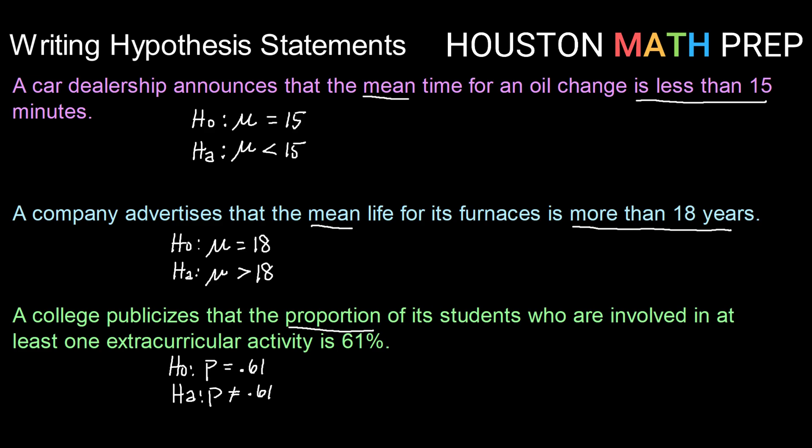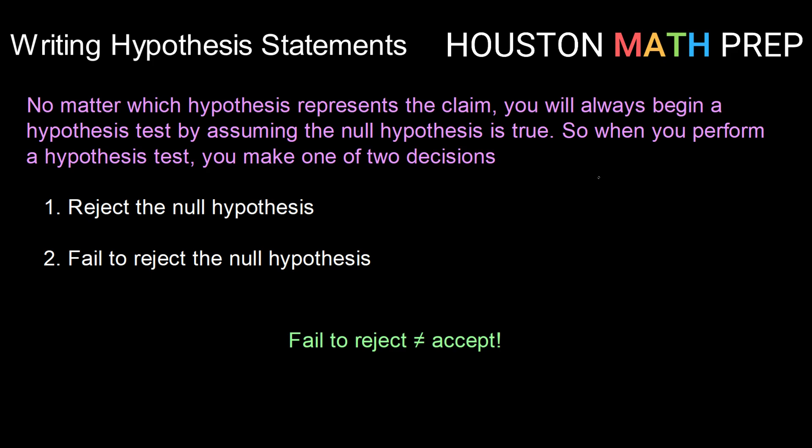Now, what do we do with those hypothesis statements? Well, once we have those, we are going to run our hypothesis test, and we're going to make a decision based upon the outcome of that test. But it's important to know that you will always begin a hypothesis test by assuming that the null hypothesis is true. So the distribution that you're going to be working with is one that assumes your null hypothesis is true.